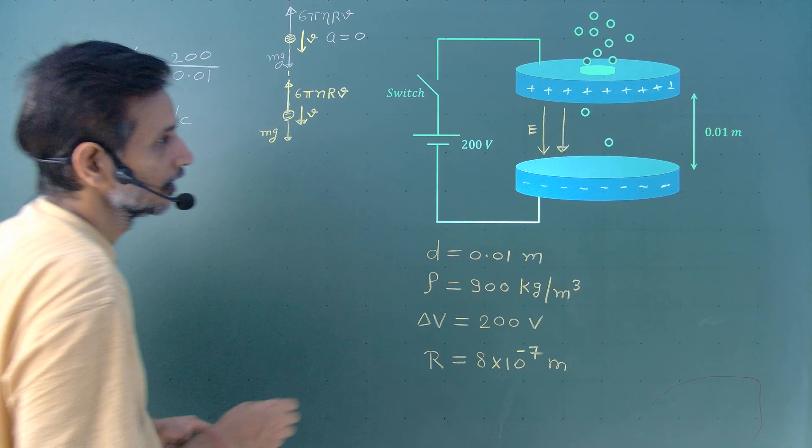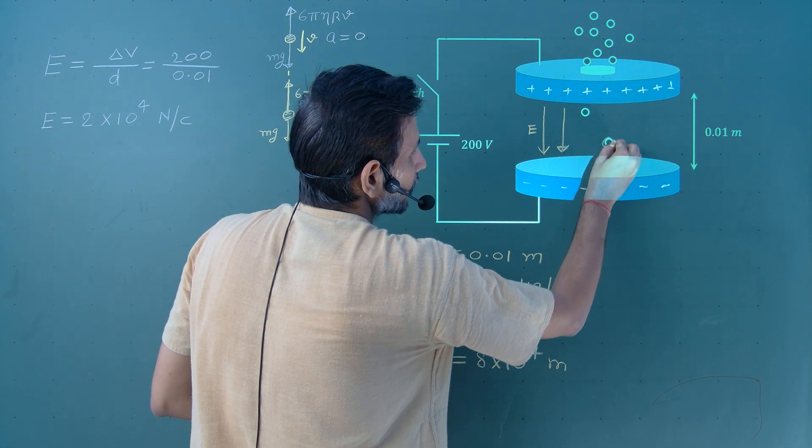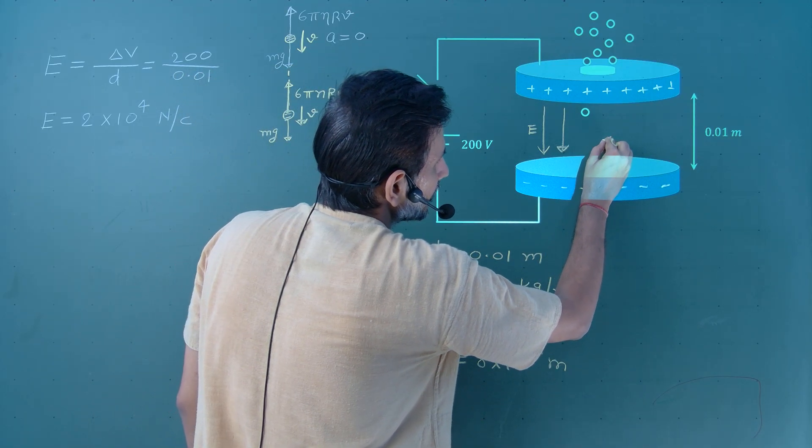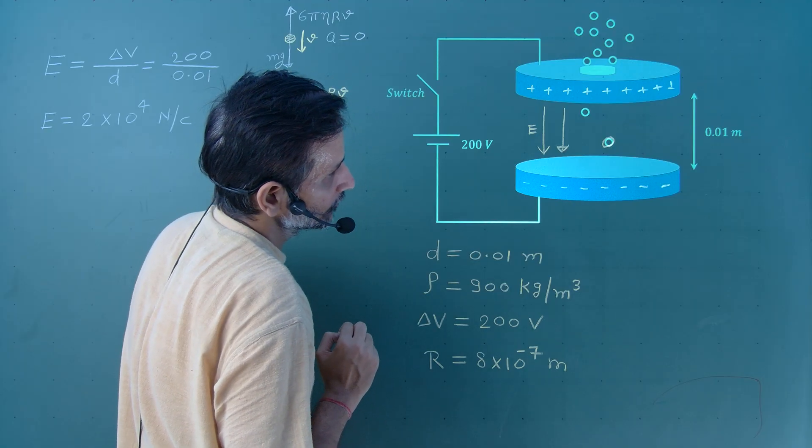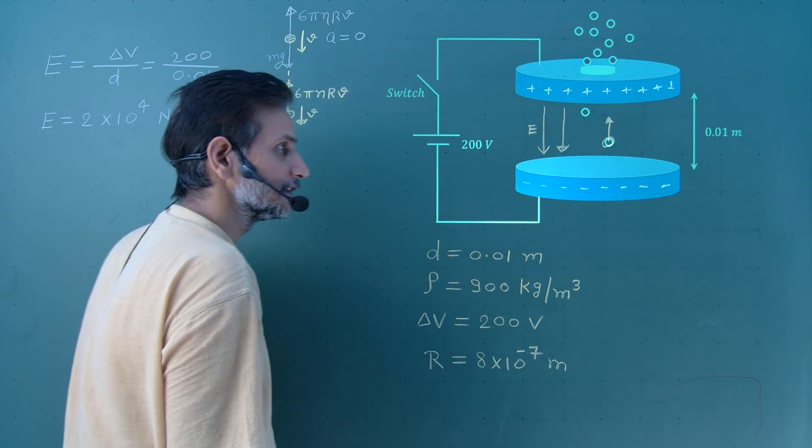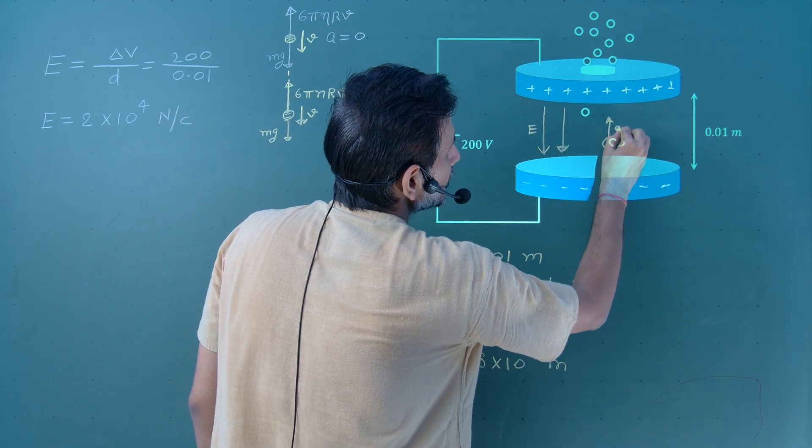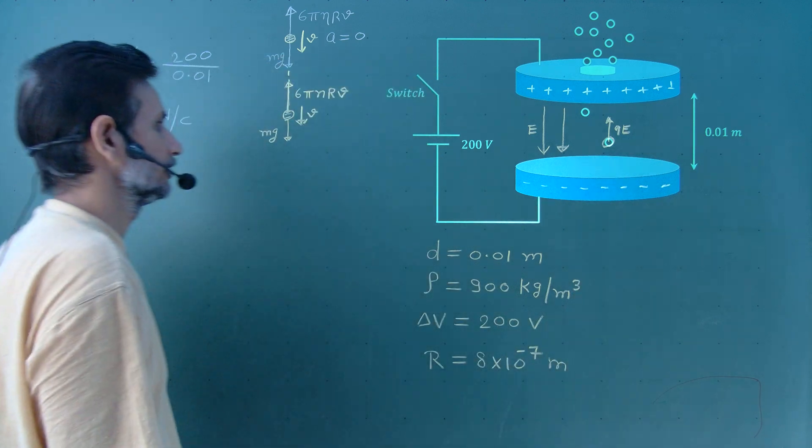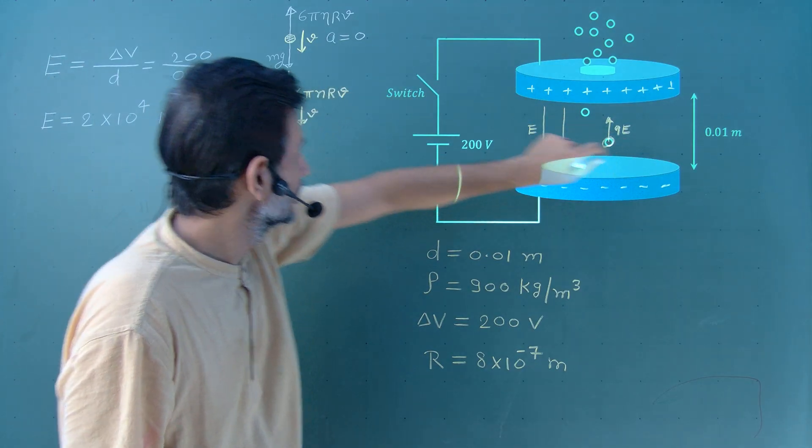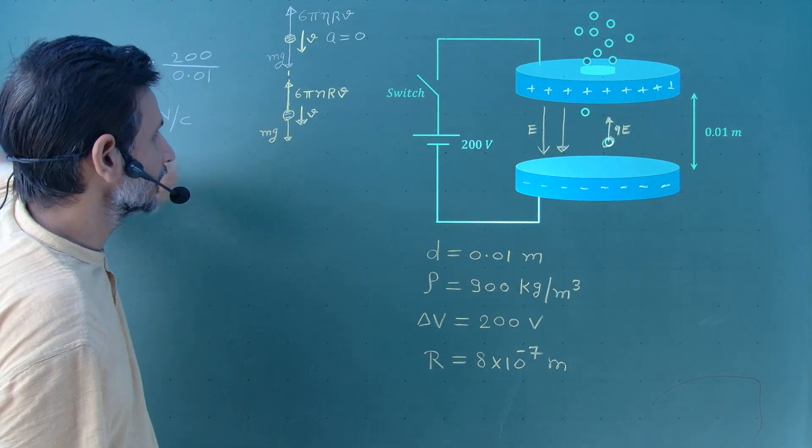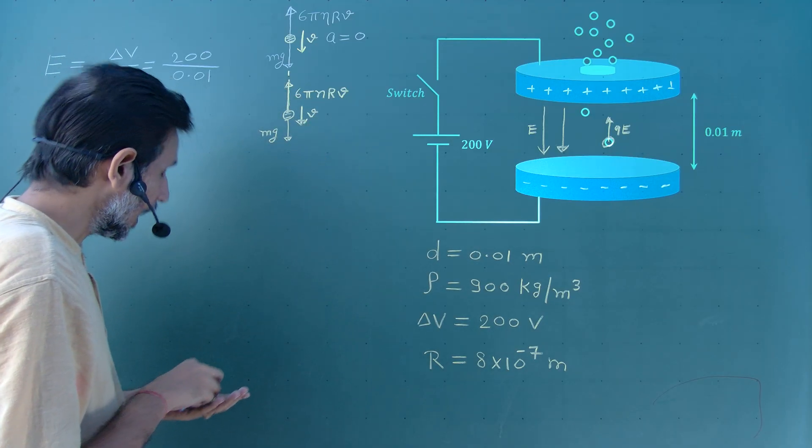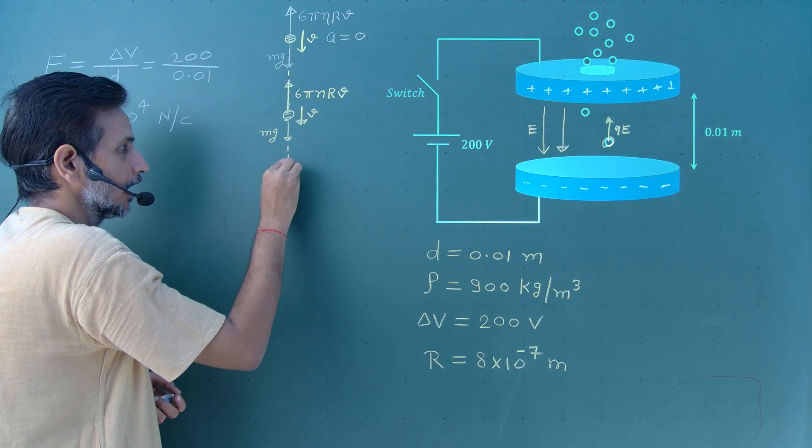Due to this electric field, the excess electron on this drop, due to the excess electron present in this drop, a force will act on this drop in vertically upward direction. What is the magnitude of this force? Q into E, charge into electric field. Now, at this situation, total force is 0. When this force acts, there will be an acceleration in upward direction. Due to that acceleration, this speed will go down and after some time, there will be a situation when this V becomes 0.